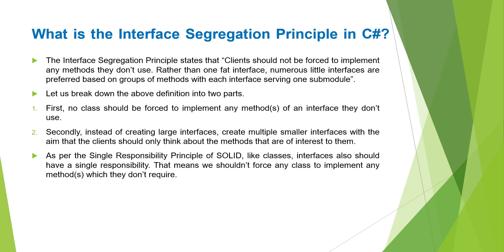Before proceeding with the examples, let us first understand the basic definition of Interface Segregation Principle. The basic definition states that the client should not be forced to implement any methods they don't use. Rather than one fat interface, numerous little interfaces are preferred based on groups of methods, with each interface serving one submodule.